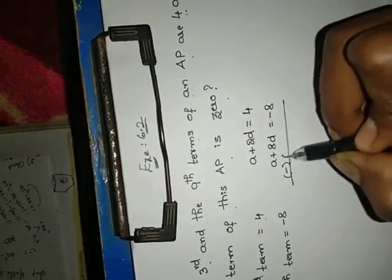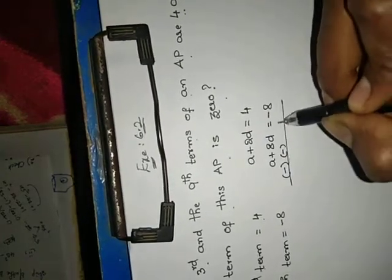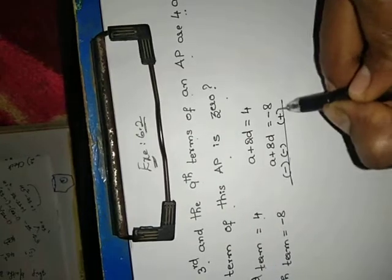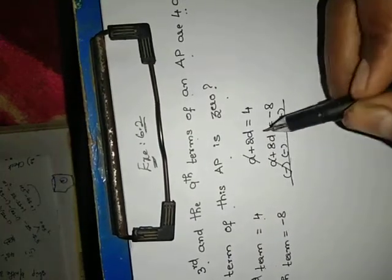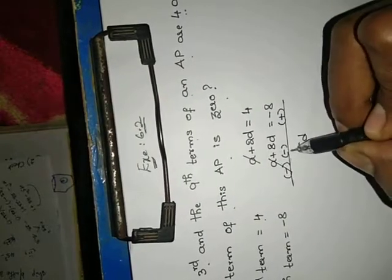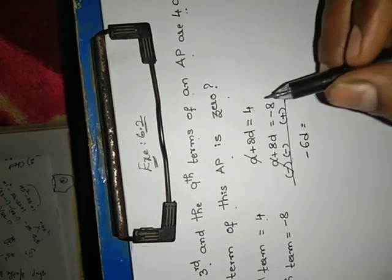Now solve this. Plus becomes minus, minus becomes plus for solving. A plus A cancel. 8 minus 2 = 6D. Bigger number symbol — minus equals to 8 plus 4.